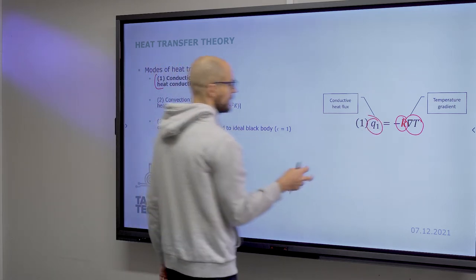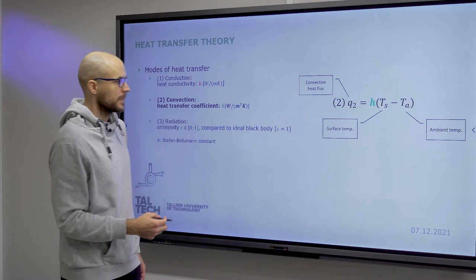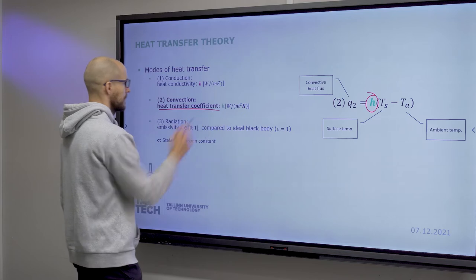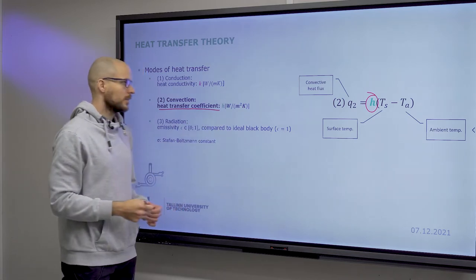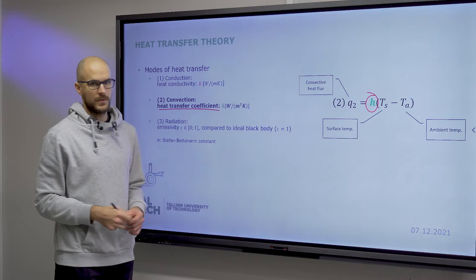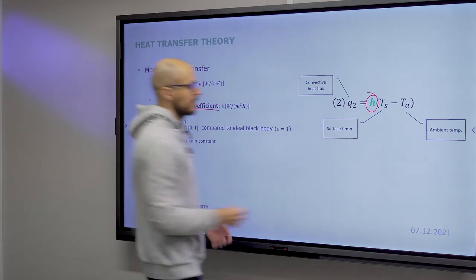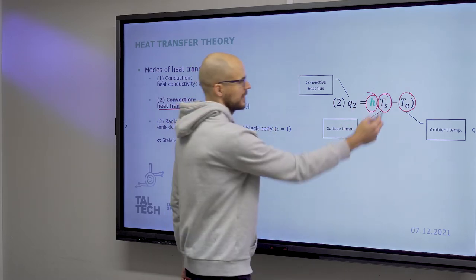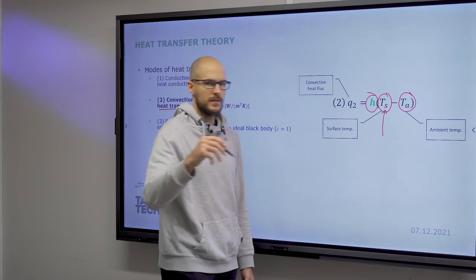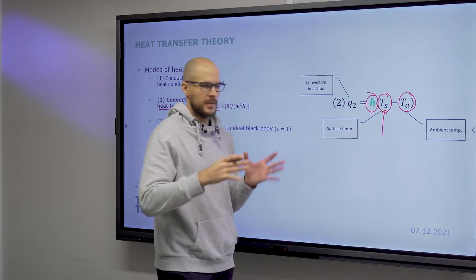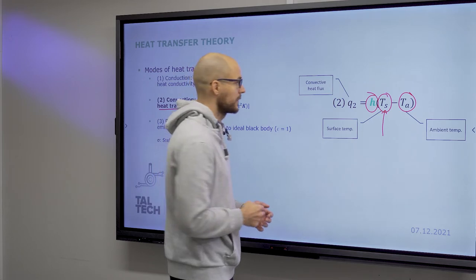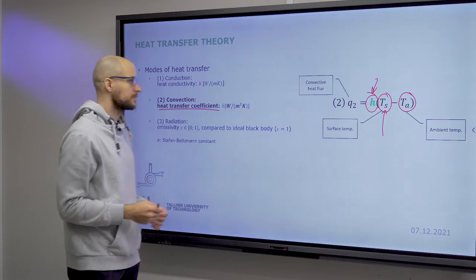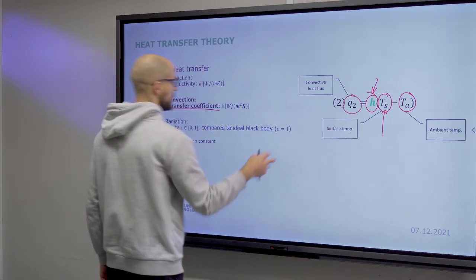This is your convective heat flux. For convection, you have this heat transfer coefficient, which is watts per meter squared Kelvin. Surface temperature minus ambient temperature, surface being the surface from which you communicate heat to the ambient, which is a fluid. Typically it would be air in our applications, multiplied by the heat transfer coefficient. That gives you the convective heat flux.